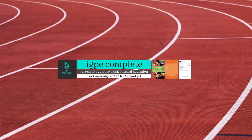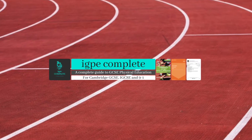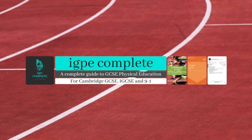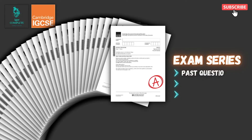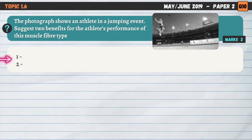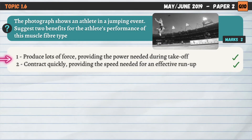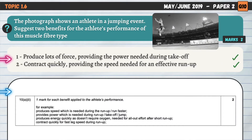Hello and welcome to another complete Cambridge IGCSE PE lesson, part one of our exam series where we'll break down and simplify every single past paper question since the introduction of the new syllabus in 2019. Today's lesson focuses specifically on chapter one, the skeletal and muscular system, and there are 15 questions, model answers and mark schemes to review.